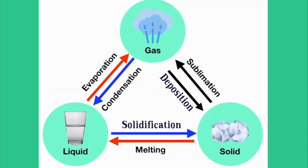So we have three states of matter: solid, liquid, and gas. And we have six different physical changes. Repeat after me: melting, solidification, evaporation, condensation, sublimation, deposition.